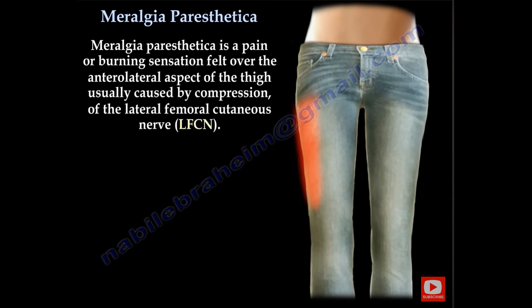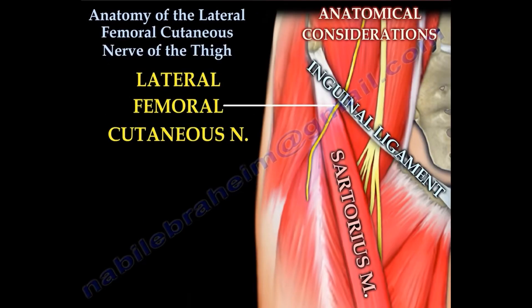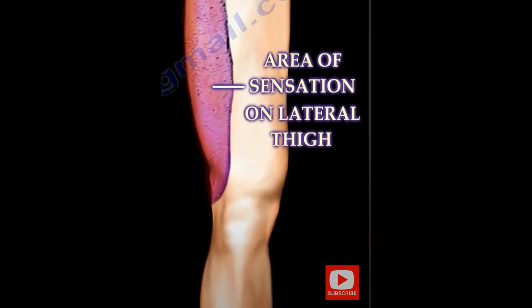We must recognize meralgia paresthetica, which is a burning sensation felt over the anterolateral aspect of the thigh due to compression of the lateral cutaneous nerve of the thigh. Here is the anatomy of the lateral cutaneous nerve, which lies very close to the Smith-Petersen approach, between the sartorius and the tensor fascia lata. This is the area of loss or decreased sensation on the lateral thigh.